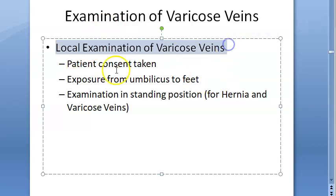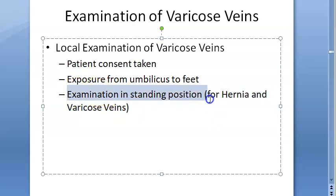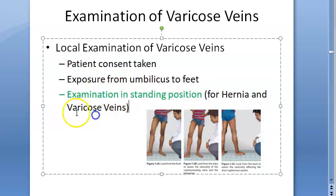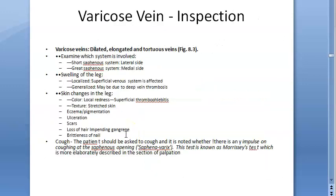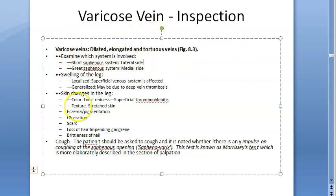For local examination, take the patient's consent and expose from the umbilicus to the feet. Very importantly, examine the patient in the standing position — this applies to both hernia and varicose veins. Then begin inspection.